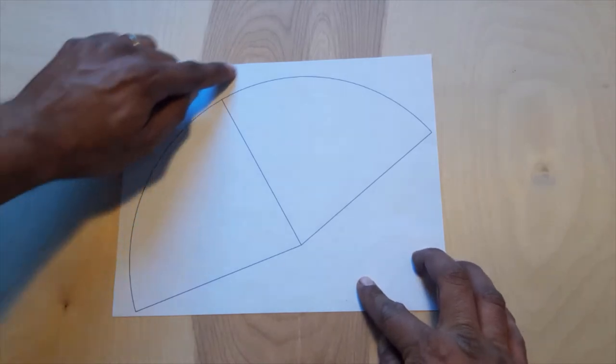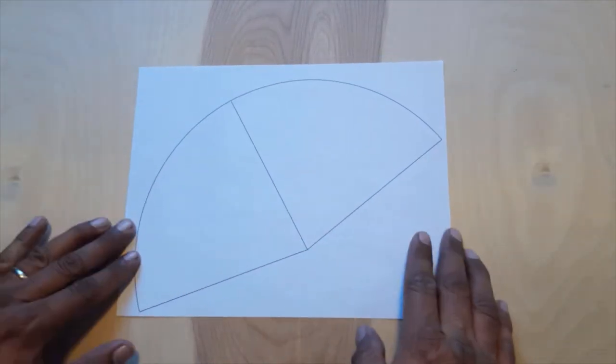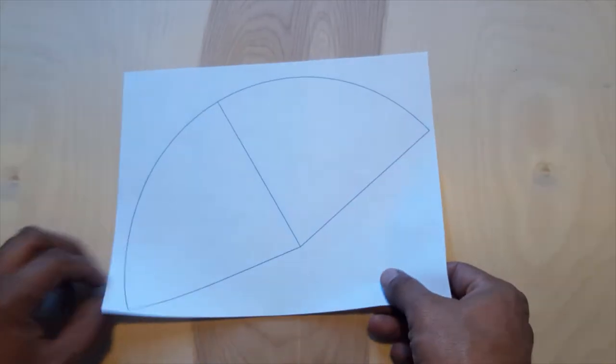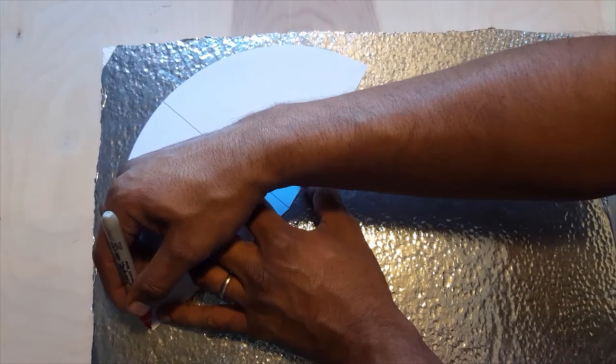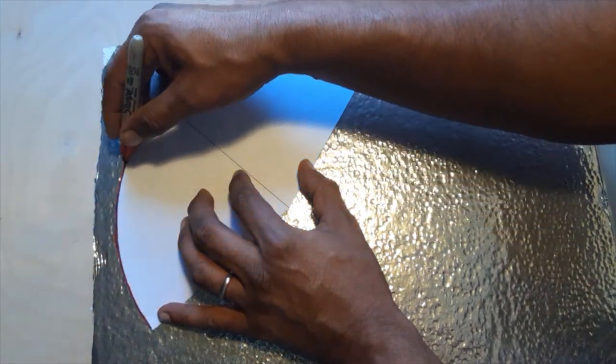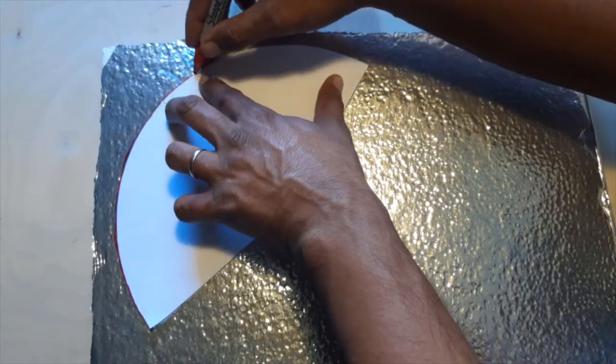The first template will help to trace a circle shape. Cut the template around the marked area. Place the template on the foam board and start marking our first section of the circle.